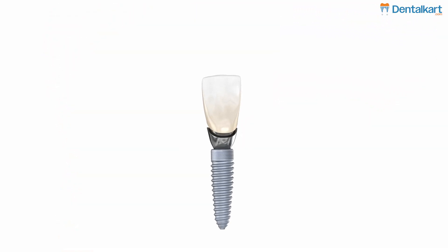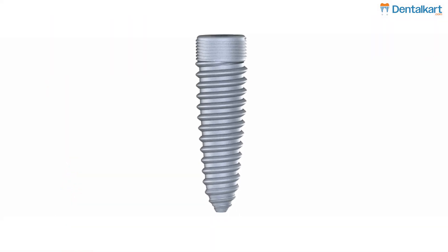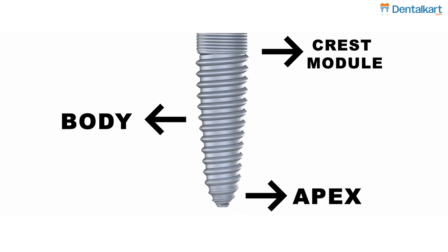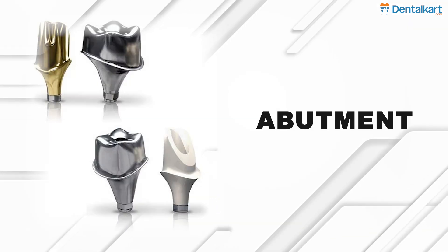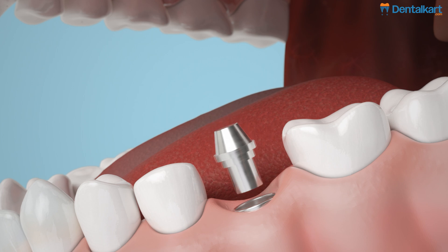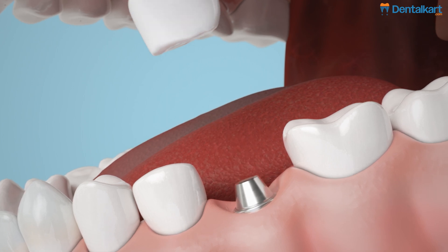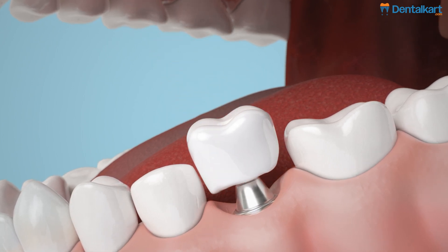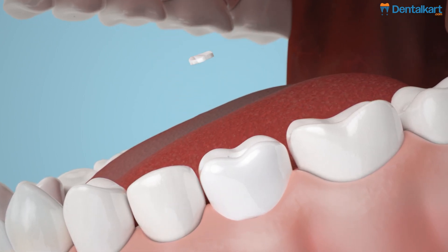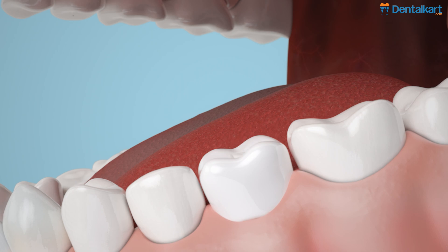The implant fixture has different parts: crest module, body, and apex. The abutment is a connector placed on top of the implant fixture. Its role is to link the fixture with the crown, creating a stable surface for attachment.